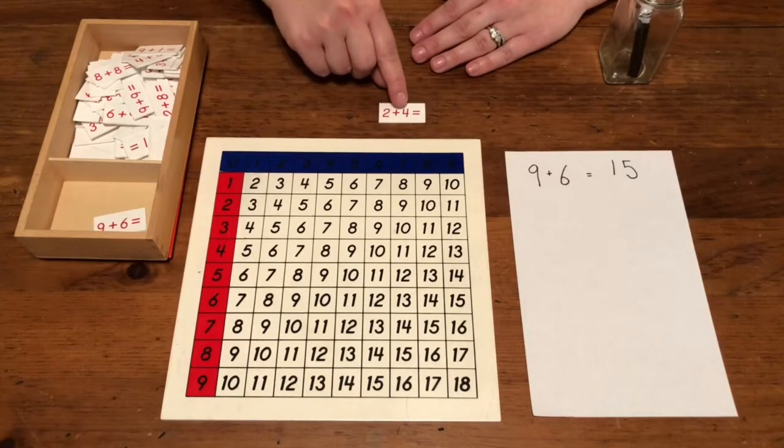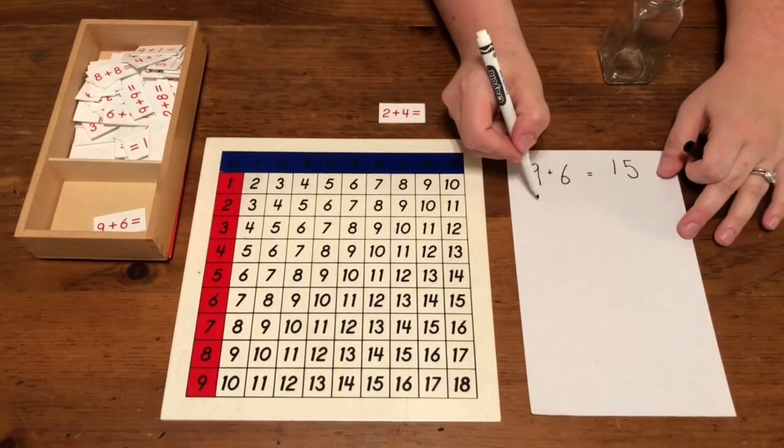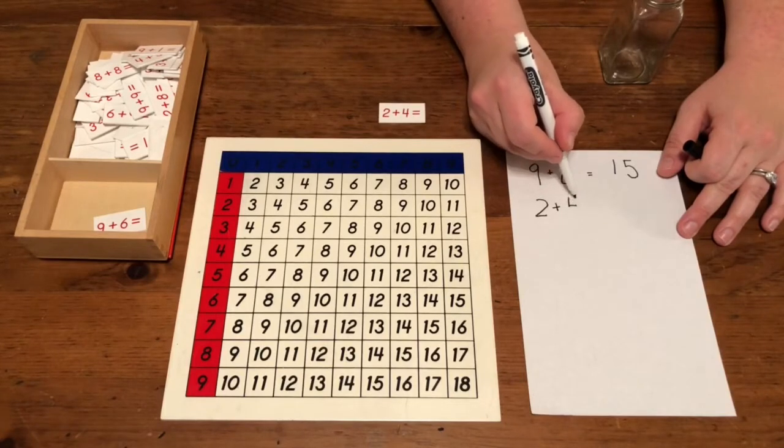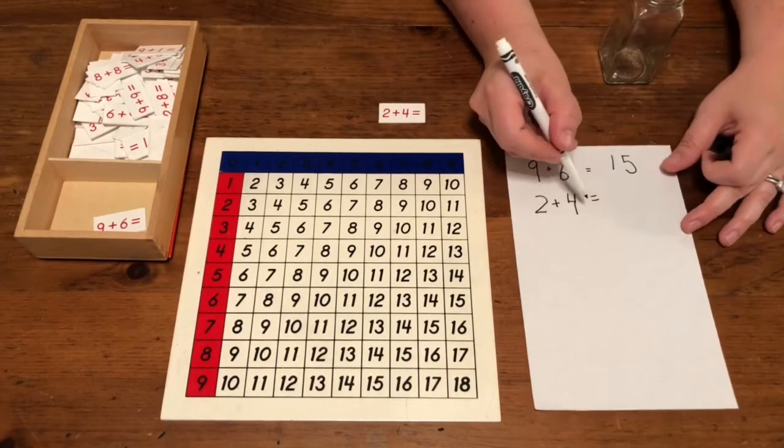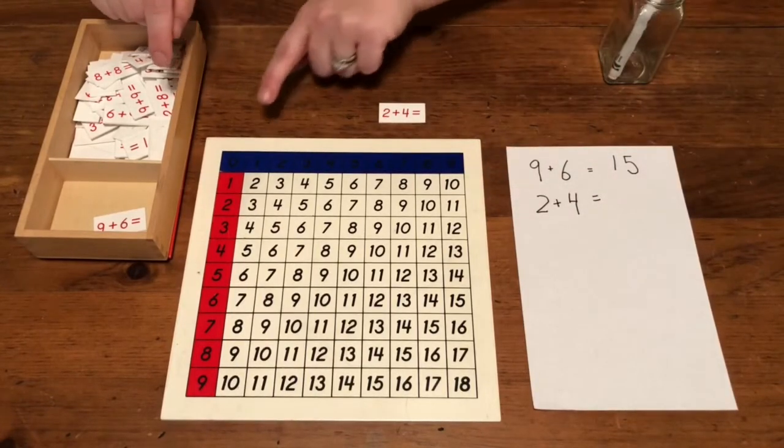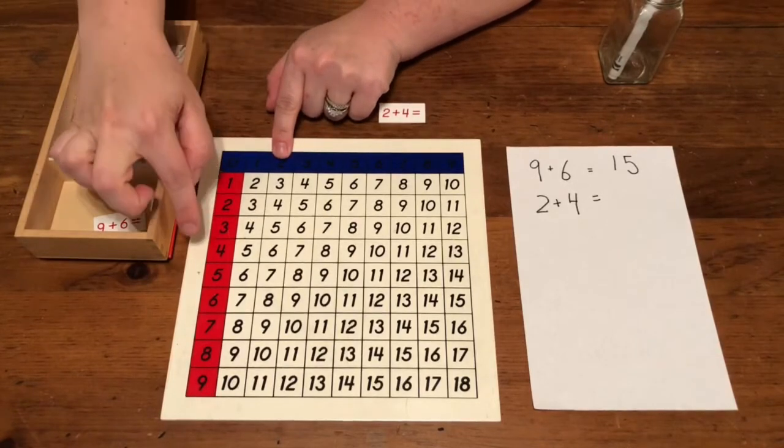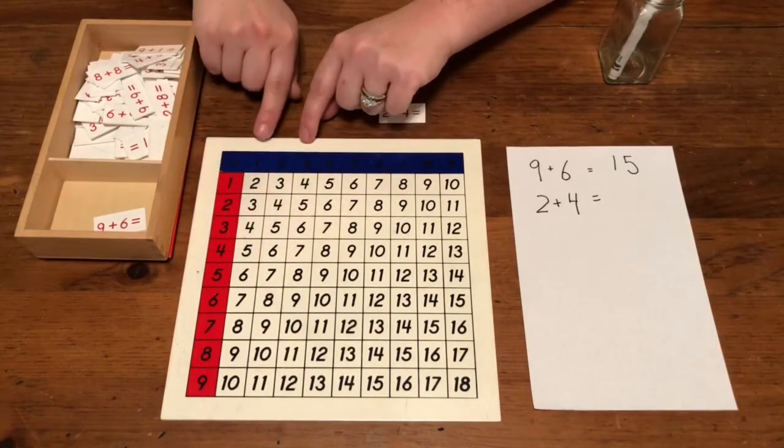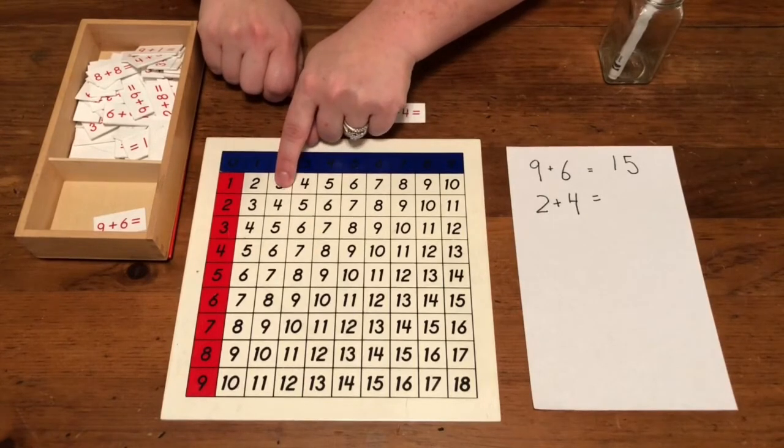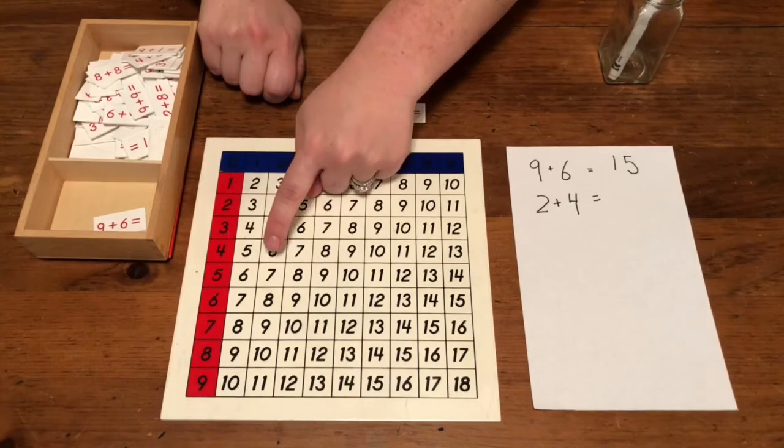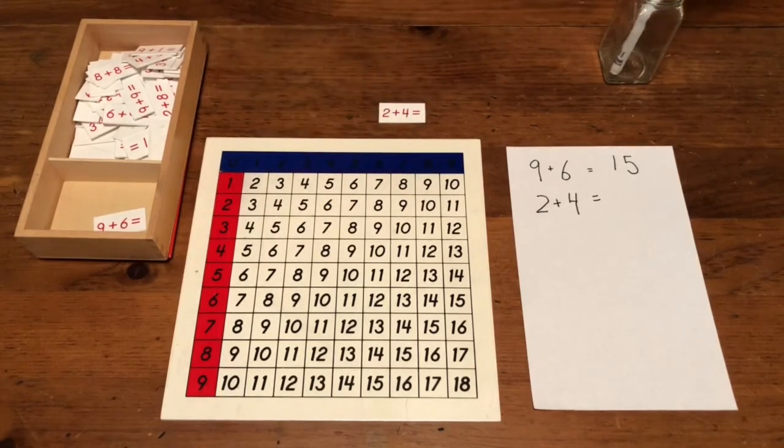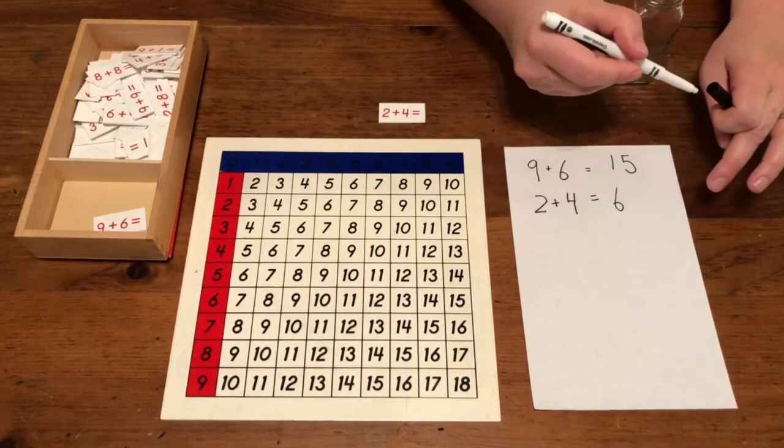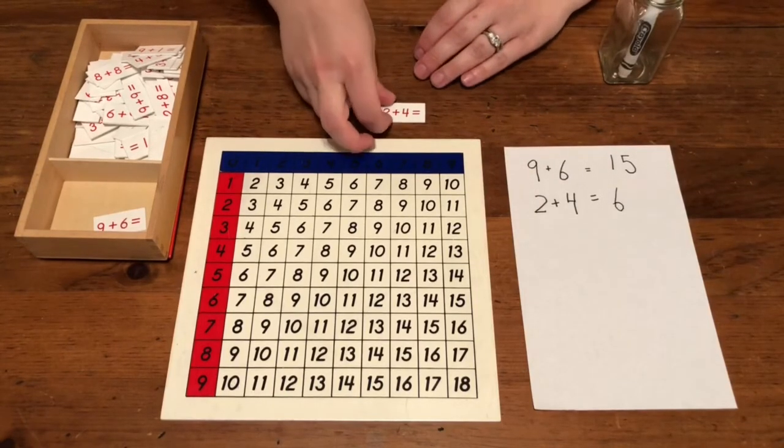Two plus four equals. So I will write that down. Two plus four equals. Let's find the answer: two plus four is six. You can also go two plus one, plus two, plus three, plus four, and it's six. I'm done with that one.